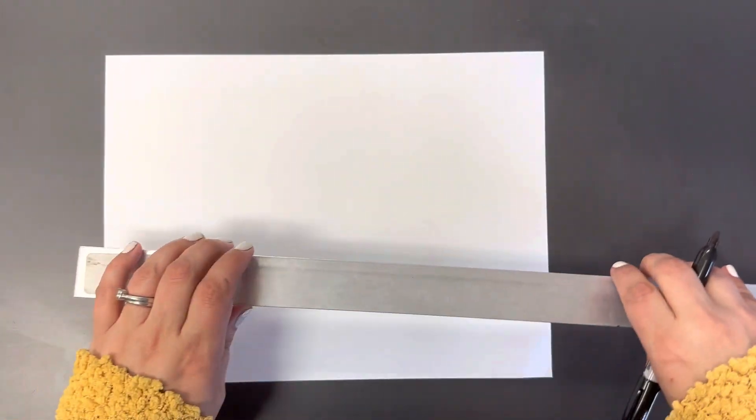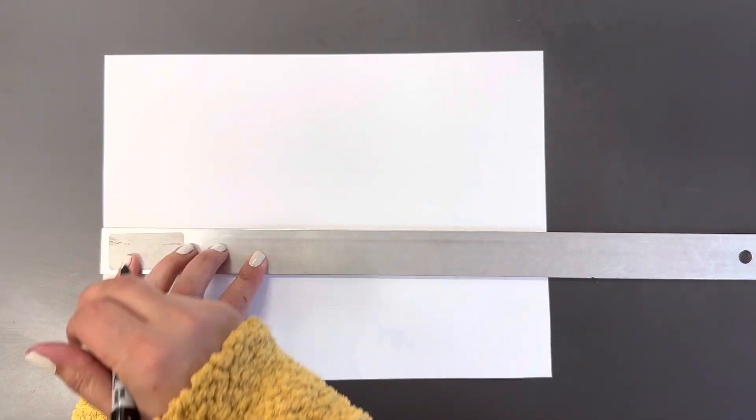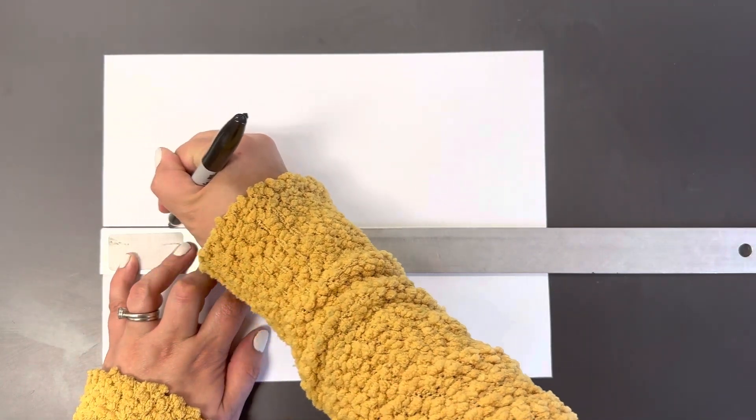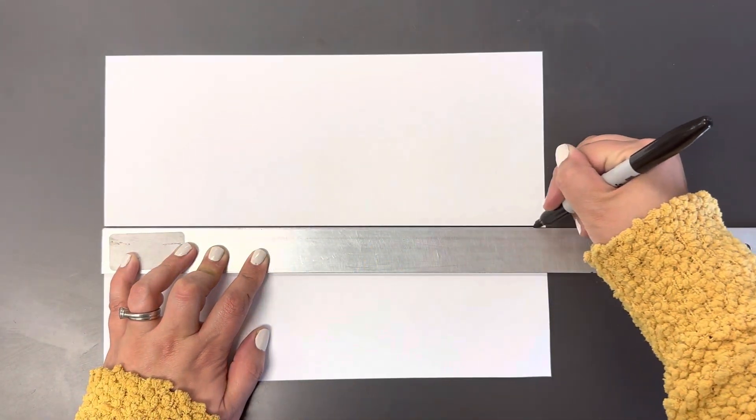Normally when I have students that come in to draw they're going to just guess if their line is horizontal or not. So they'll put their ruler down, shift it over a little bit, looks pretty close, and then they're going to draw their line.